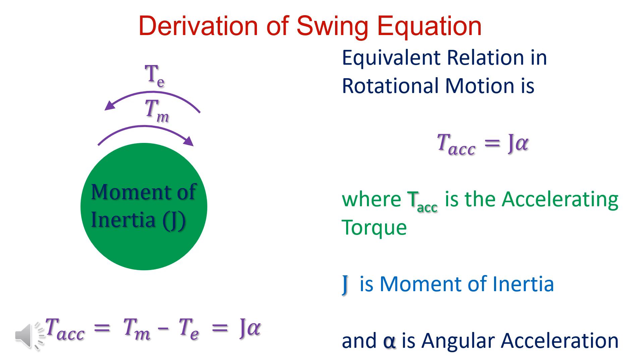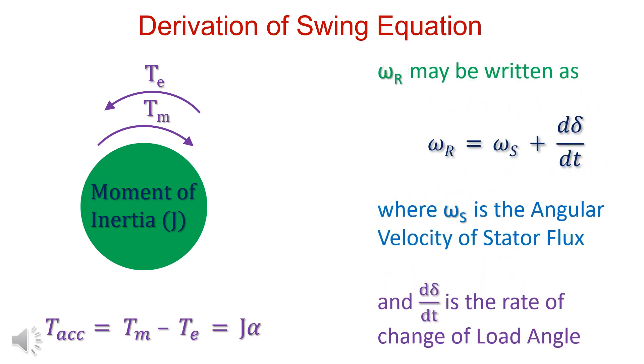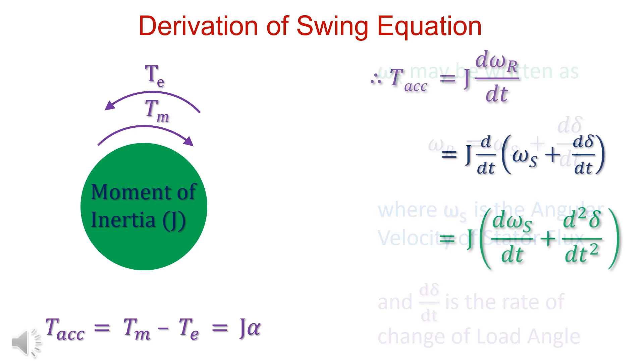Accelerating torque is equal to the rate of change of angular velocity of rotor omega r. Therefore, accelerating torque is equal to j d omega r by dt. Omega r equals omega s plus d delta by dt, where omega s is angular velocity of stator flux. Therefore, accelerating torque equals j times d omega s by dt plus d square delta by dt square.